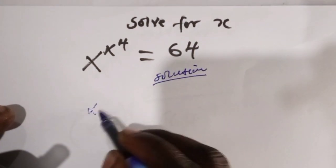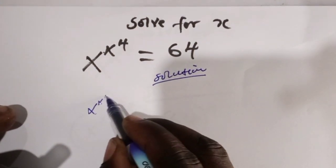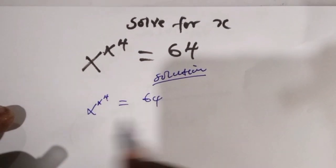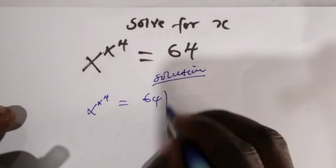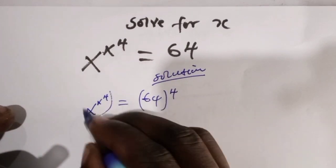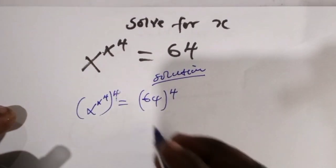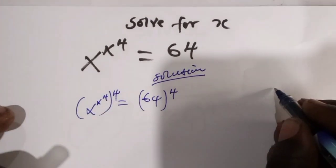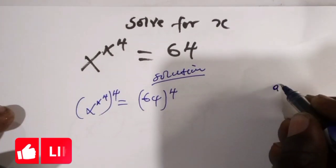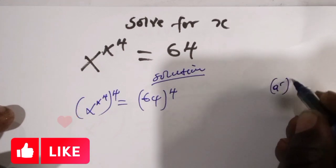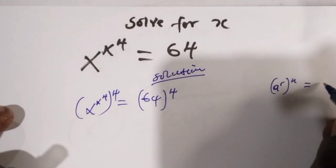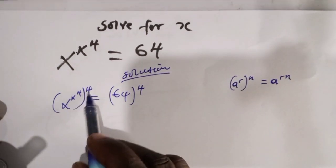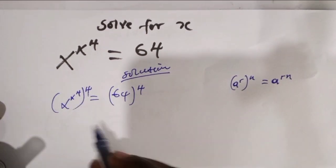For solution, we have x to the power x power 4 which equals 64. To solve this kind of exponential equation, you have to introduce a power 4 on both sides, in which you are going to have here, this means you have a power r to the power n, this one can equal a power r times n. So we have to take this 4 inside and this one outside.